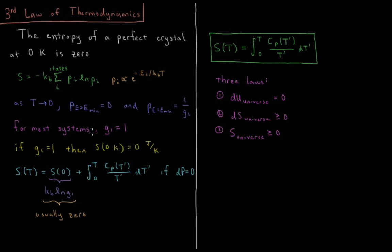For most systems, that ground state, its degeneracy, there's just one state that has the lowest possible energy. And if there's one state that has the lowest possible energy, then its probability is 1.